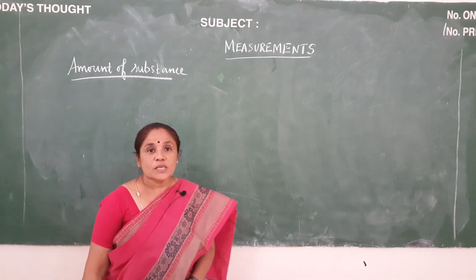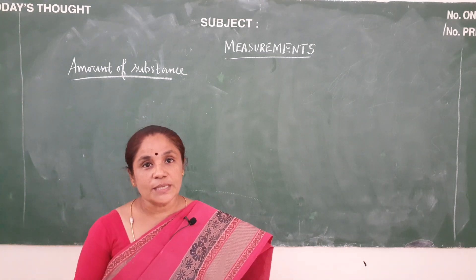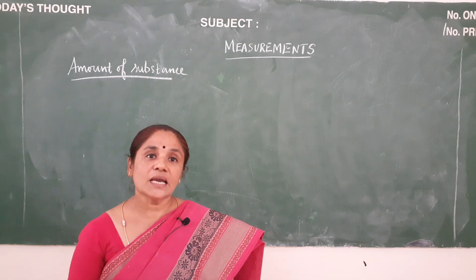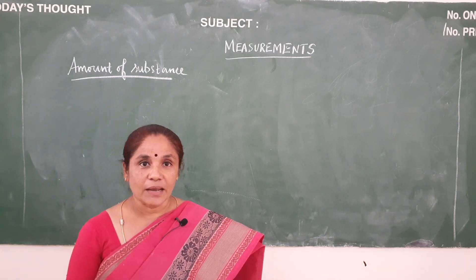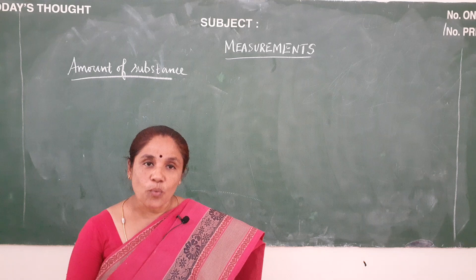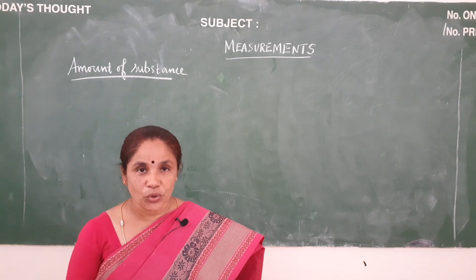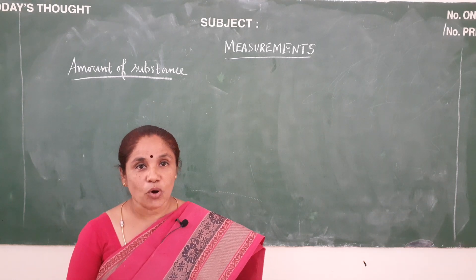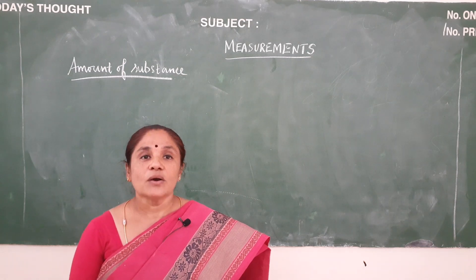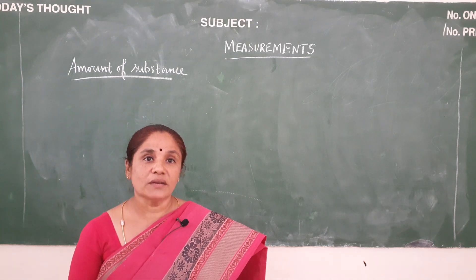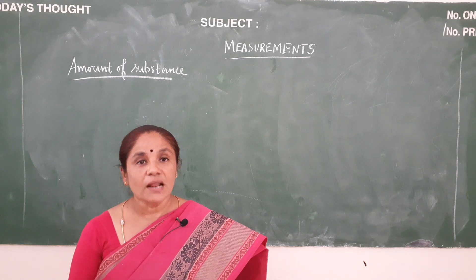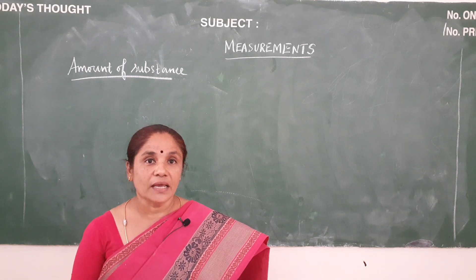Suppose I give you few copper coins and I ask you to count them, you will very easily count it and tell me the exact number. But if I give you only one copper coin and I ask you to count the number of atoms or molecules, you will find it very difficult to do that, because atoms are very small, they are indivisible, and they could not be seen with the naked eye.